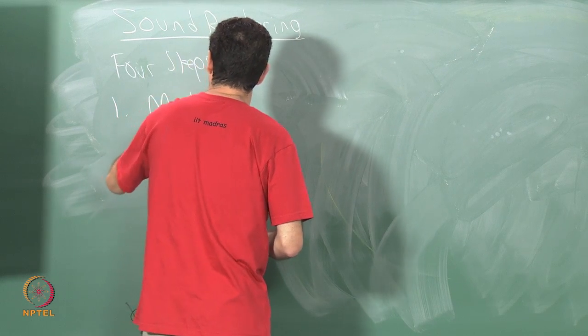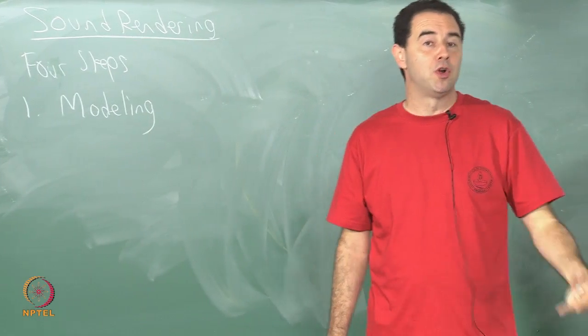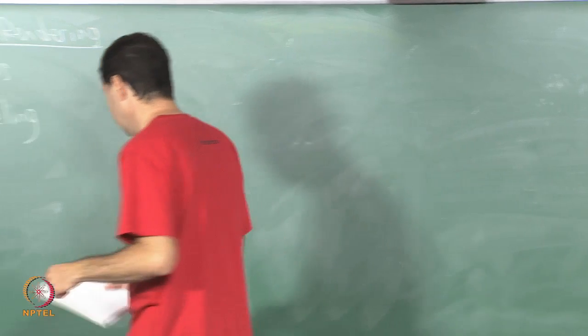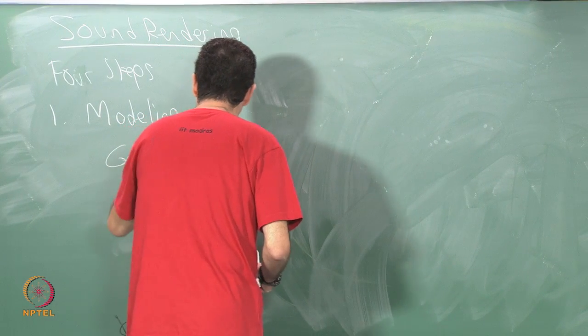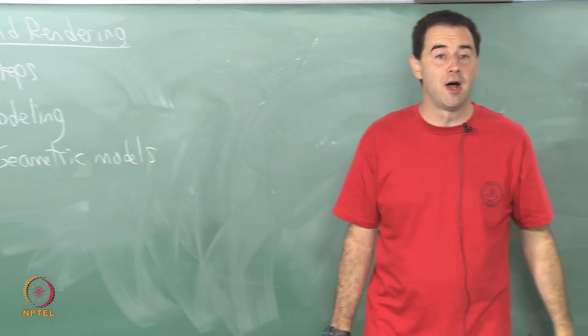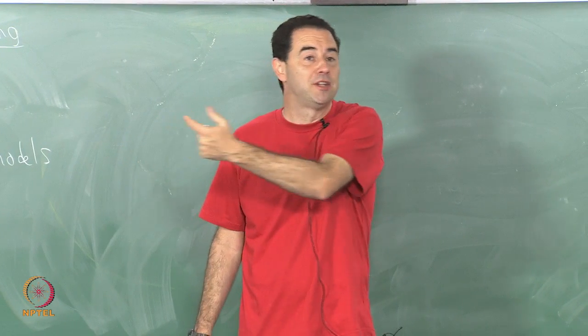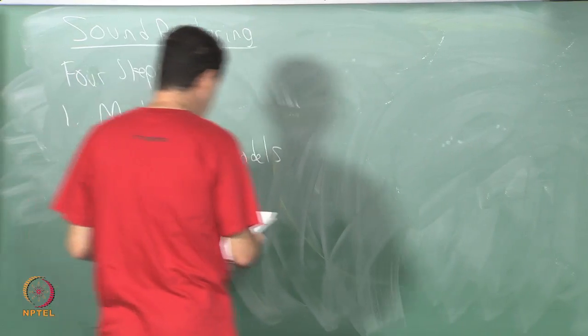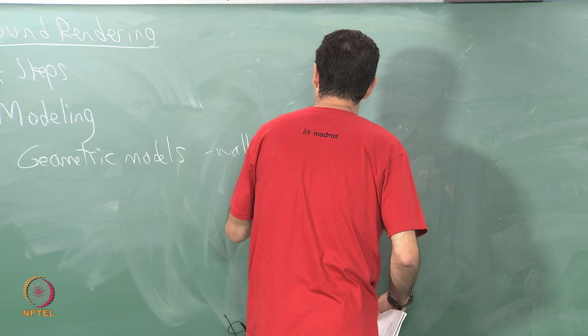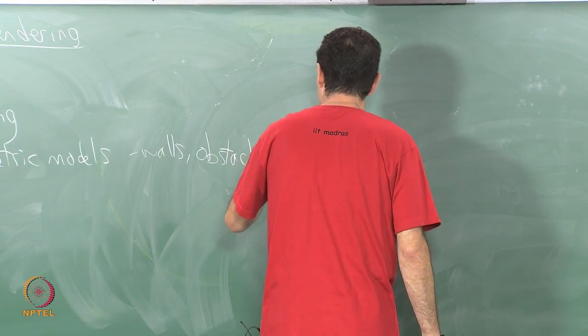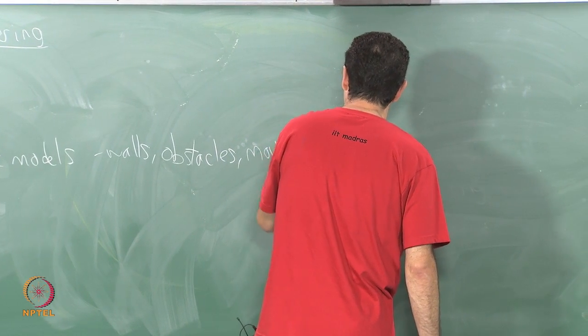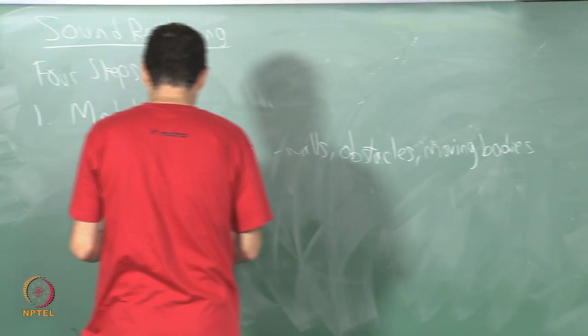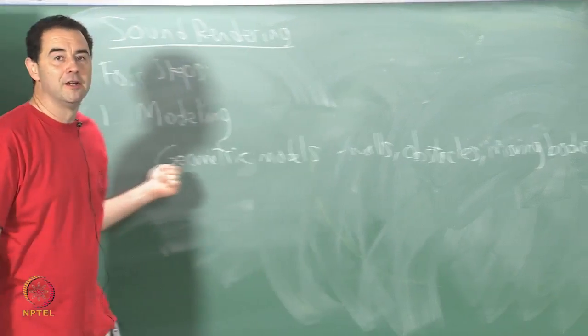Four steps. One: we have modeling. For the visual case we talked about geometric models. We will again have geometric models. We can have stationary or movable models. You could have a moving object that generates sound or maybe sound will be bouncing off of a moving object. So, walls, obstacles, moving bodies. Perhaps you have a bird that is flying in VR and generating sounds.